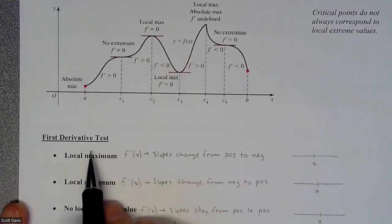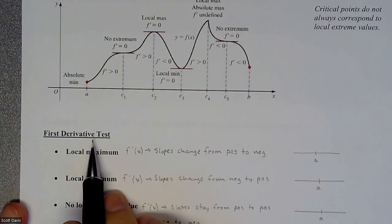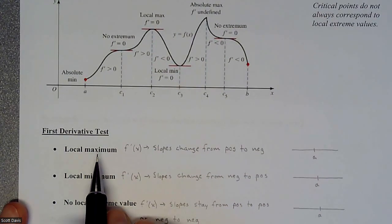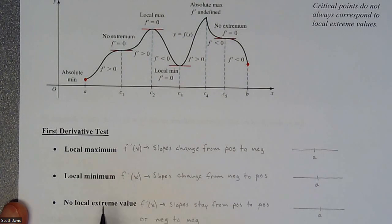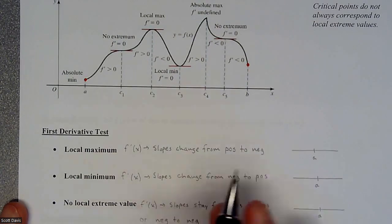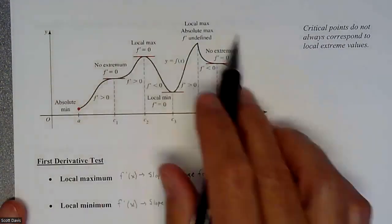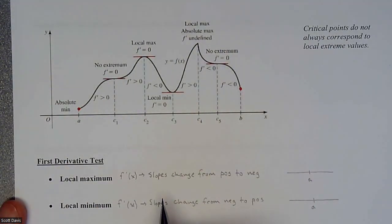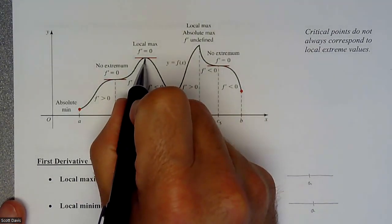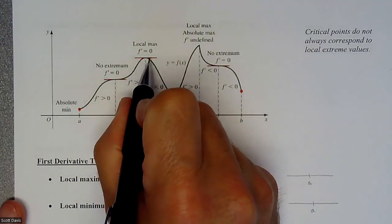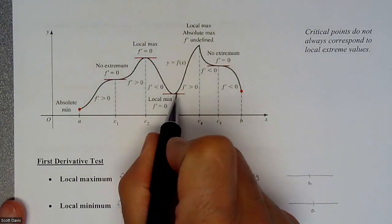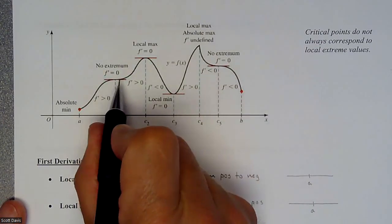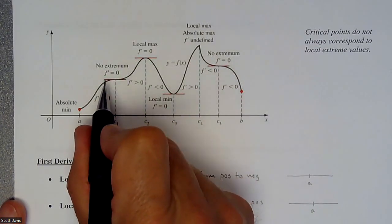In this example, we're going to be talking about our first derivative test, which is going to help us figure out some local maximums, local minimums, and whether we have no maximum but a potential extrema. So here's what we've got going on. What we're looking for is when the slope is zero — we're either going to have a potential maximum, minimum, or something that I call a chair.